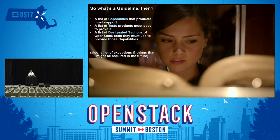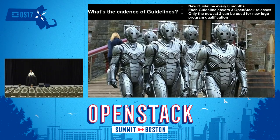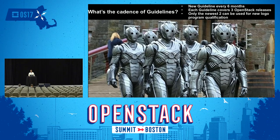There are also a few other things in the guidelines: a list of exceptions, things that we found problems with, and things that might be required in the future so you can look ahead. Guidelines roll out every six months, offset from OpenStack releases by a couple of months, so each guideline covers three and a half releases. The newest two can be used by a vendor if they want a logo or trademark agreement from the OpenStack Foundation.